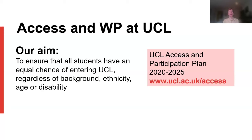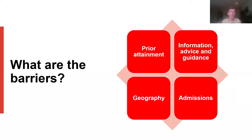I work in the Access and Widening Participation team at UCL. Our aim is to ensure that all students have an equal chance of entering UCL, regardless of background, ethnicity, age or disability. Our stated aim is to make sure that we have a more representative cohort of undergraduates, working to tackle all barriers that prevent those from underrepresented groups accessing UCL and highly selective universities, and that they can succeed once they get here. Prior attainment is a key barrier — there are huge gaps that start quite early on in school for some young people and have only widened since the pandemic. On average, underrepresented groups don't get the grades required to enter UCL, so a large part of our work looks to address that attainment gap between the most advantaged and the least advantaged.